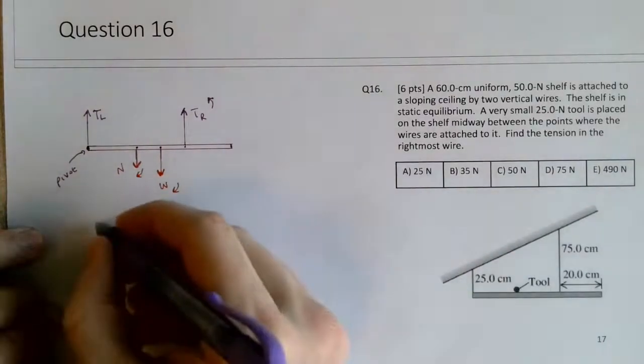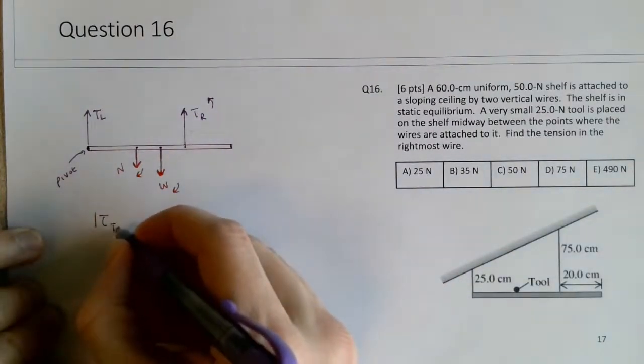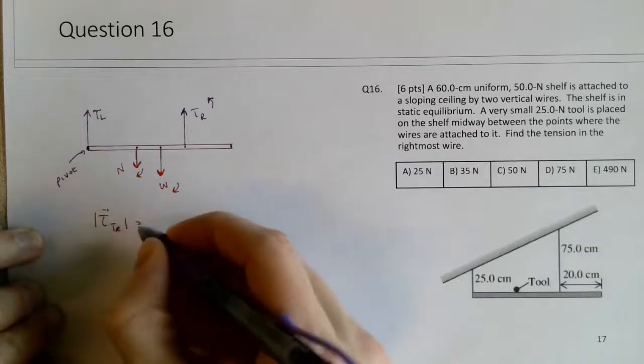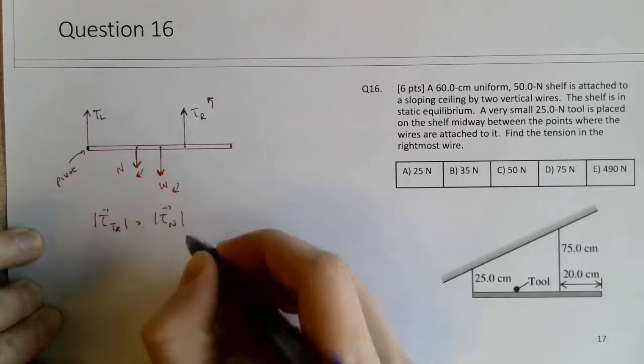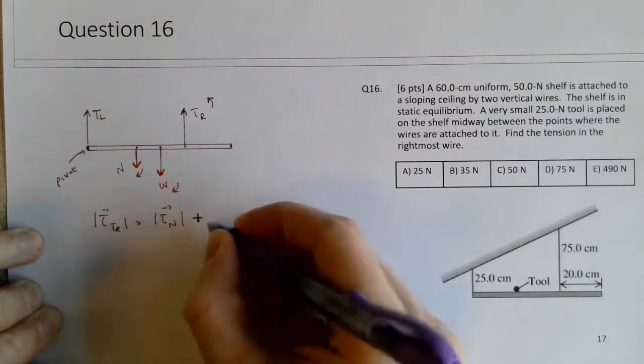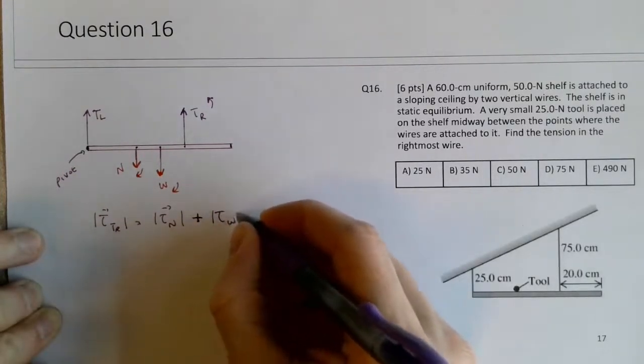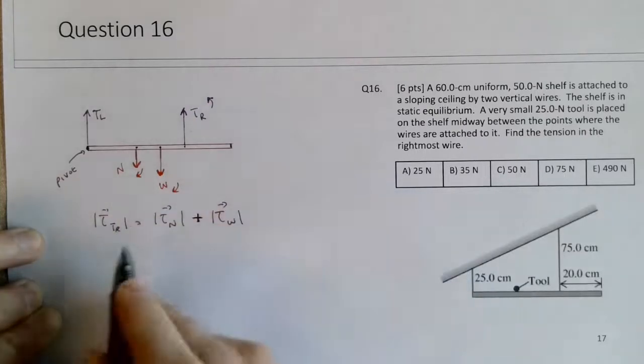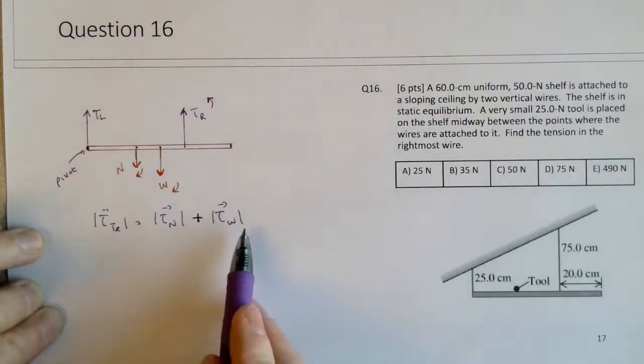So I would set up in the sense that the magnitude of the torque for the tension in the right is equal to the magnitude of the torque by the tool force, plus this plus here, the torque due to the weight. So again, what I'm setting up here is making my counterclockwise torques equal to my clockwise torques.